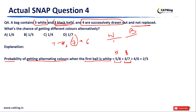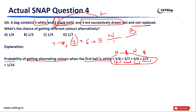The third draw corresponds to white again. Now 6 balls remain and there are 4 white balls left (originally 5, one drawn), so the probability is 4/6. The fourth draw is black: 5 balls remain, and 2 black balls remain (originally 3, one drawn), so the probability is 2/5. Multiplying all four: (5/8) × (3/7) × (4/6) × (2/5) = 1/14.